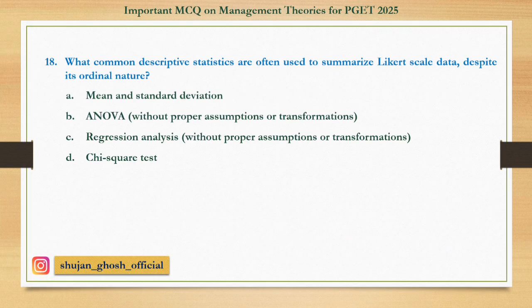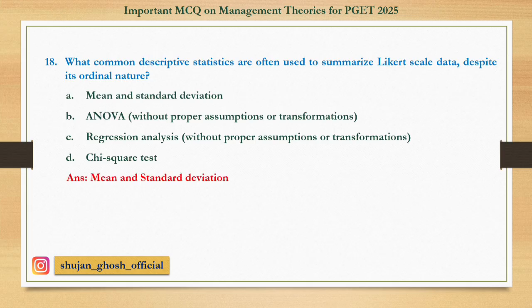Question number 18: What common descriptive statistics are often used to summarize Likert scale data despite its ordinal nature? Option A: Mean and standard deviation. B: ANOVA without proper assumptions or transformations. C: Regression analysis without proper assumptions or transformations. D: Chi-square test. Answer is Mean and standard deviation.